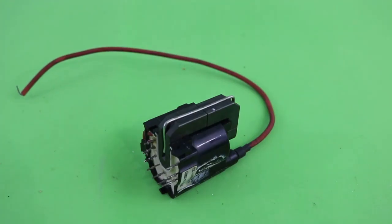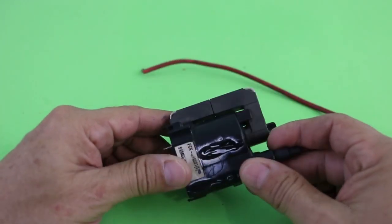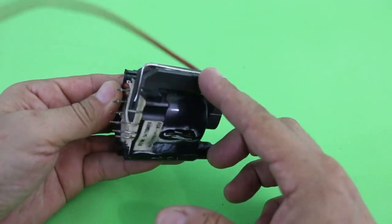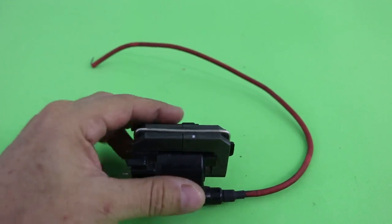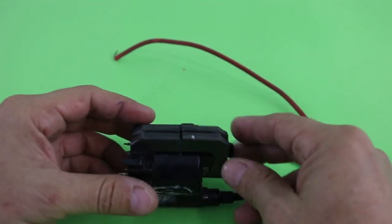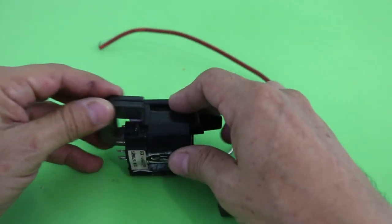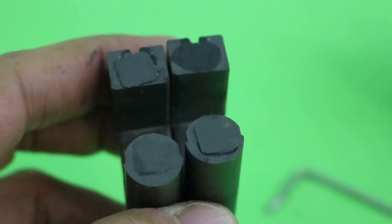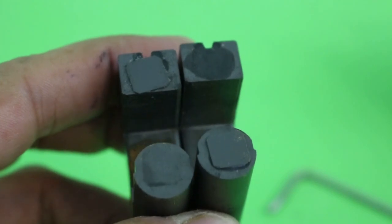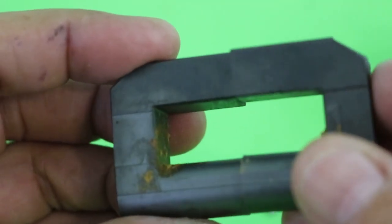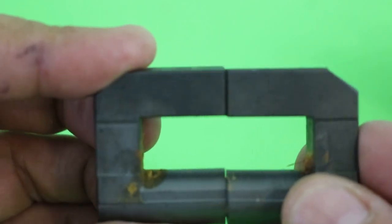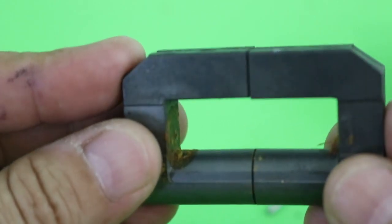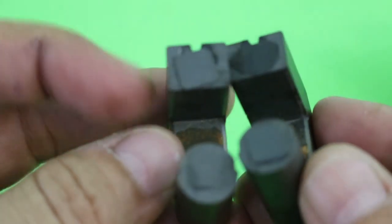The ferrite core can be obtained from a flyback. Flybacks come in old analog television sets. The core has a couple of separators. They prevent the two halves from touching each other and create a little gap. This is necessary for the correct working, so you must keep it in place.